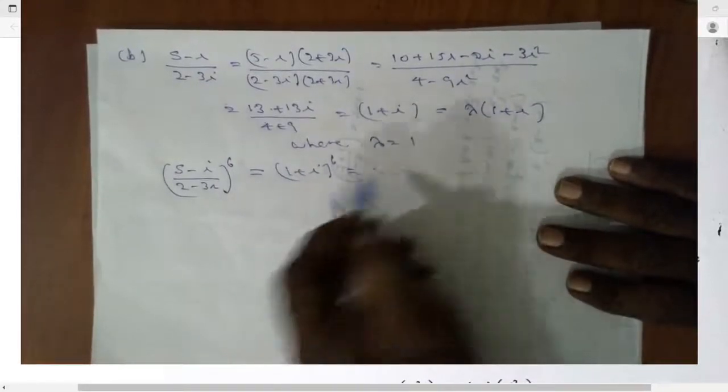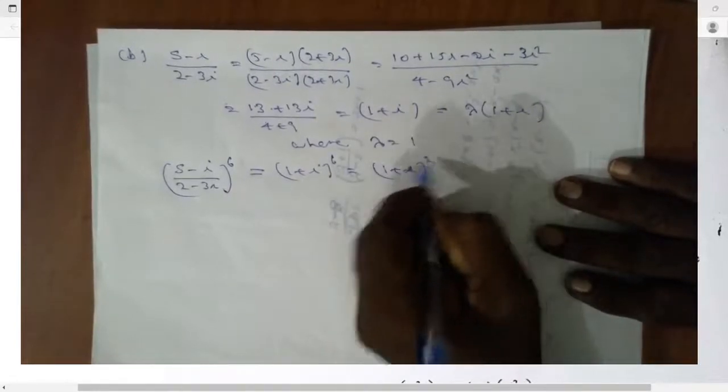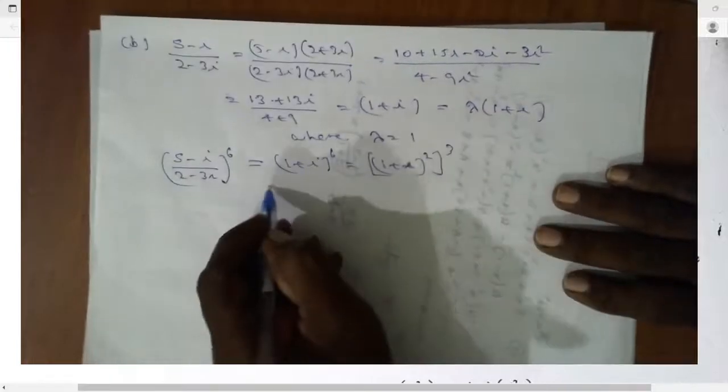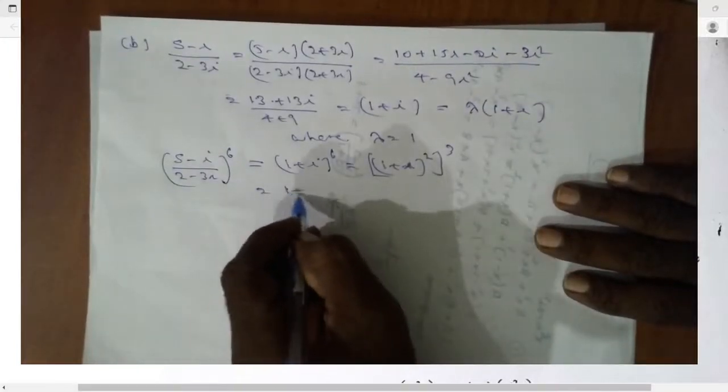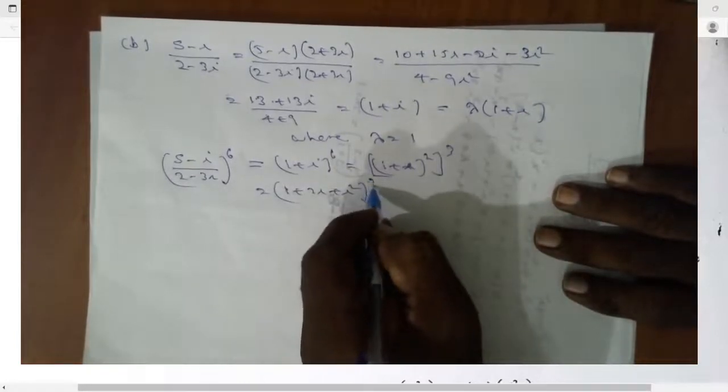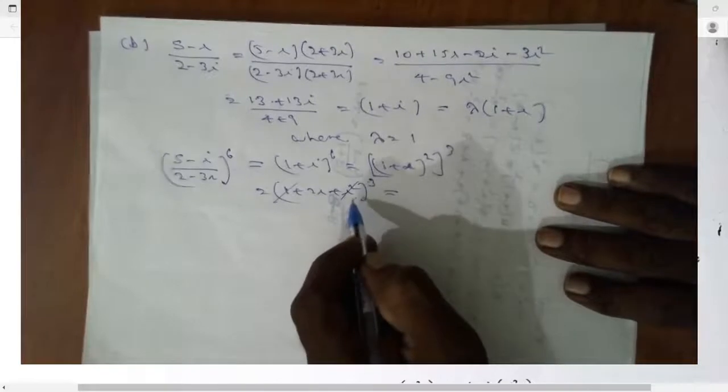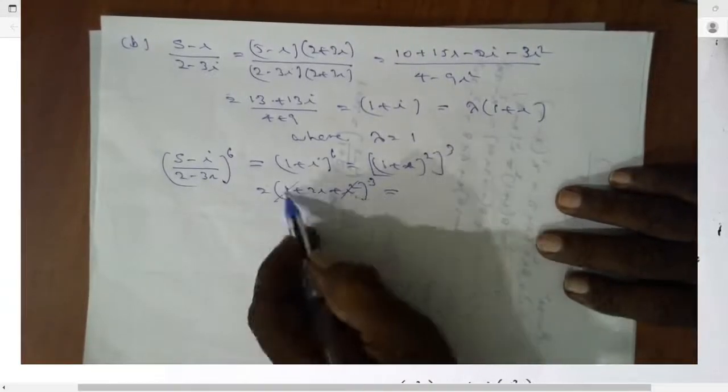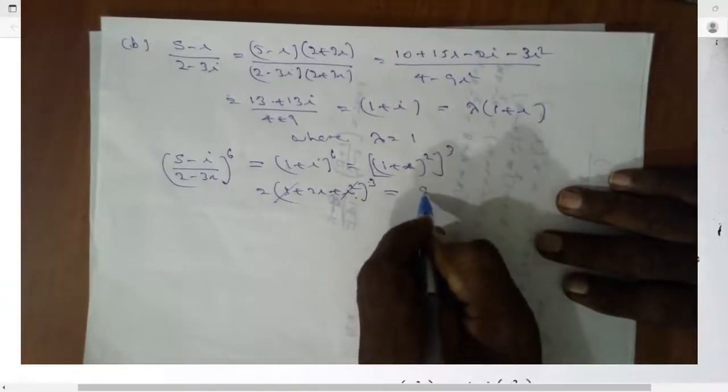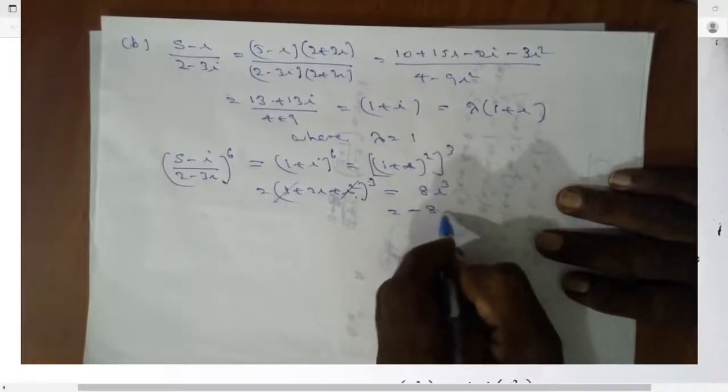So this equals 1 plus i squared to the power of 3. This equals 1 plus 2i plus i squared to the power of 3. So this equals, i squared is minus 1, plus 1 minus 1 get cancelled. So this equals 8i cubed. So this equals minus 8i. What is this?